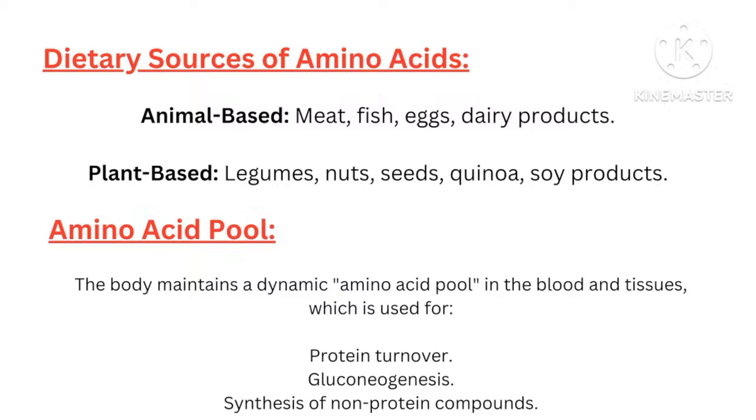Amino acid pool. The body maintains a dynamic amino acid pool in the blood and tissues, which is used for protein turnover, gluconeogenesis, and synthesis of non-protein compounds.